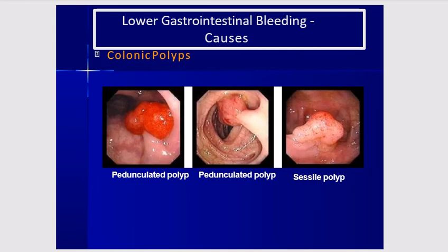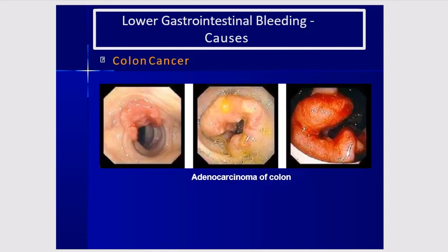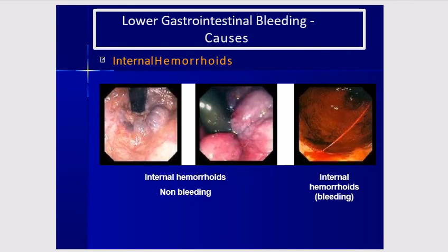These are how colonic polyps look — some are pedunculated and others are sessile. This is how carcinoma of the colon appears on endoscopy. These are hemorrhoids, both internal hemorrhoids and external hemorrhoids; some are non-bleeding and one is bleeding.